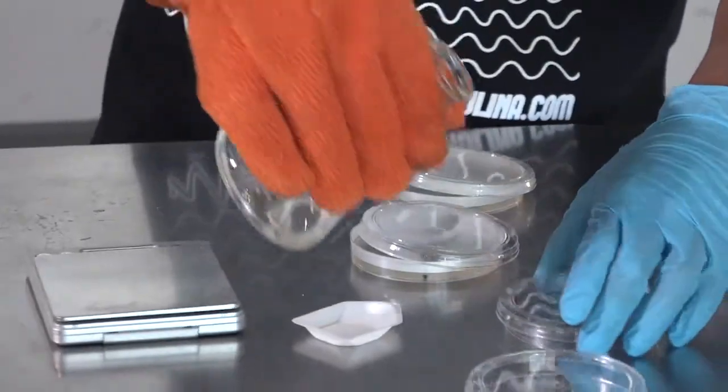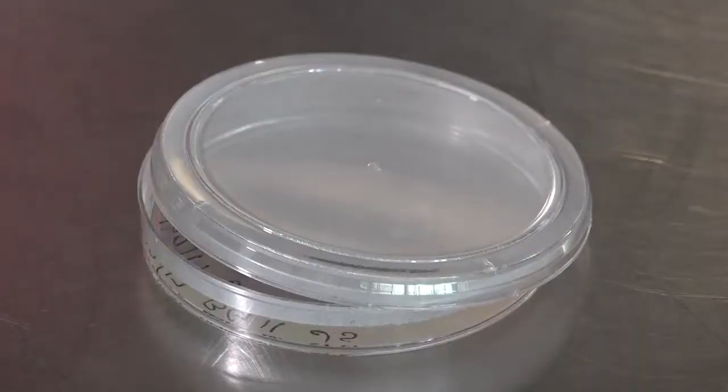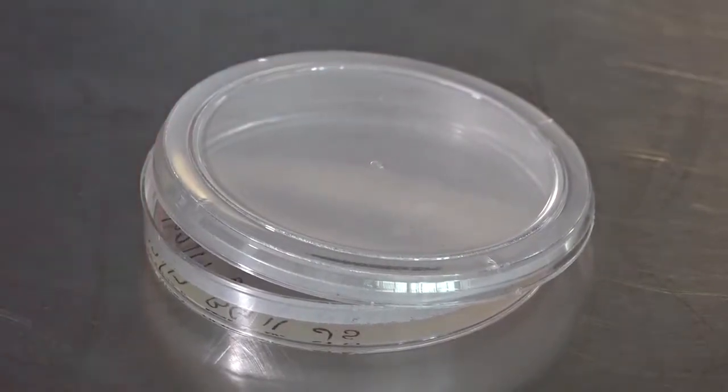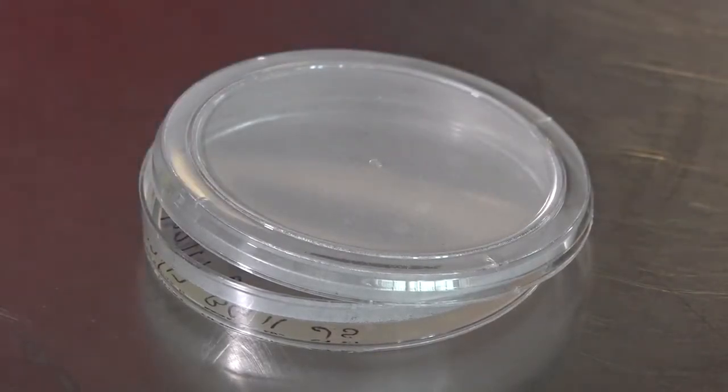If you don't, the water will condense on the lid and drip back down on your plate, contaminating it. When you pour the agar, there's going to be little bubbles on the top, and there may be microbes living on the top that we want to get rid of.